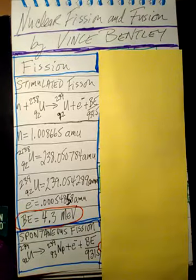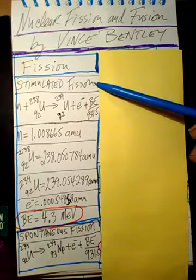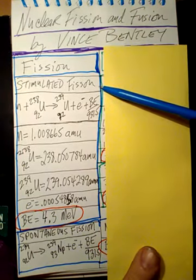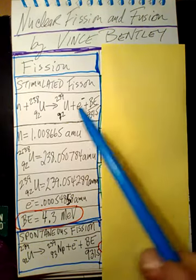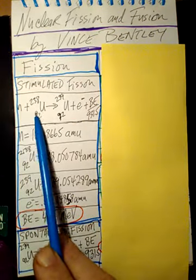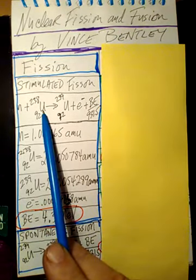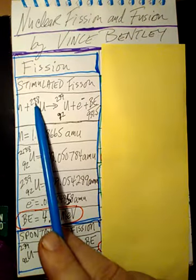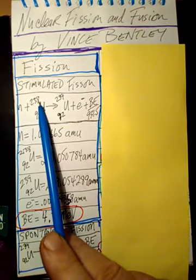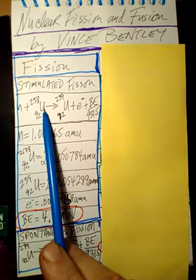Let's start off with something called stimulated nuclear fission. We're going to shoot a neutron into a uranium atom. There are many isotopes of uranium. We're going to use uranium with 92 protons, where 238 is the number of protons plus neutrons in the nucleus. We're going to take a neutron and shoot it into this uranium isotope.